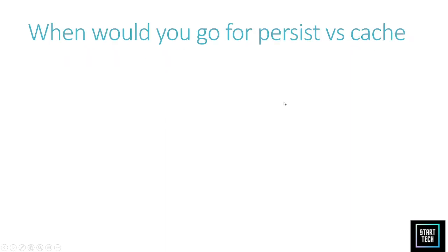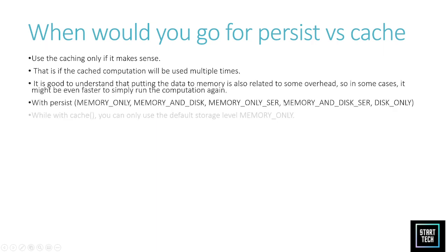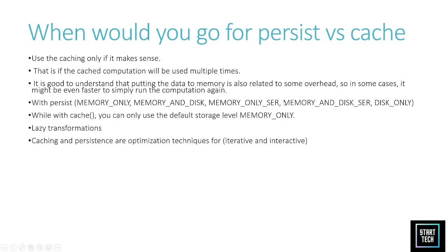Moving on — what is the difference between persist and cache, and when would you use them? The basic answer is: if you are doing iterative programming and using the same DataFrame for aggregations and calculations, you should use persist or cache. The difference is that cache provides memory-only storage, while persist allows options like memory-only, disk, memory-and-disk, memory-only serialized, and memory-and-disk serialized.